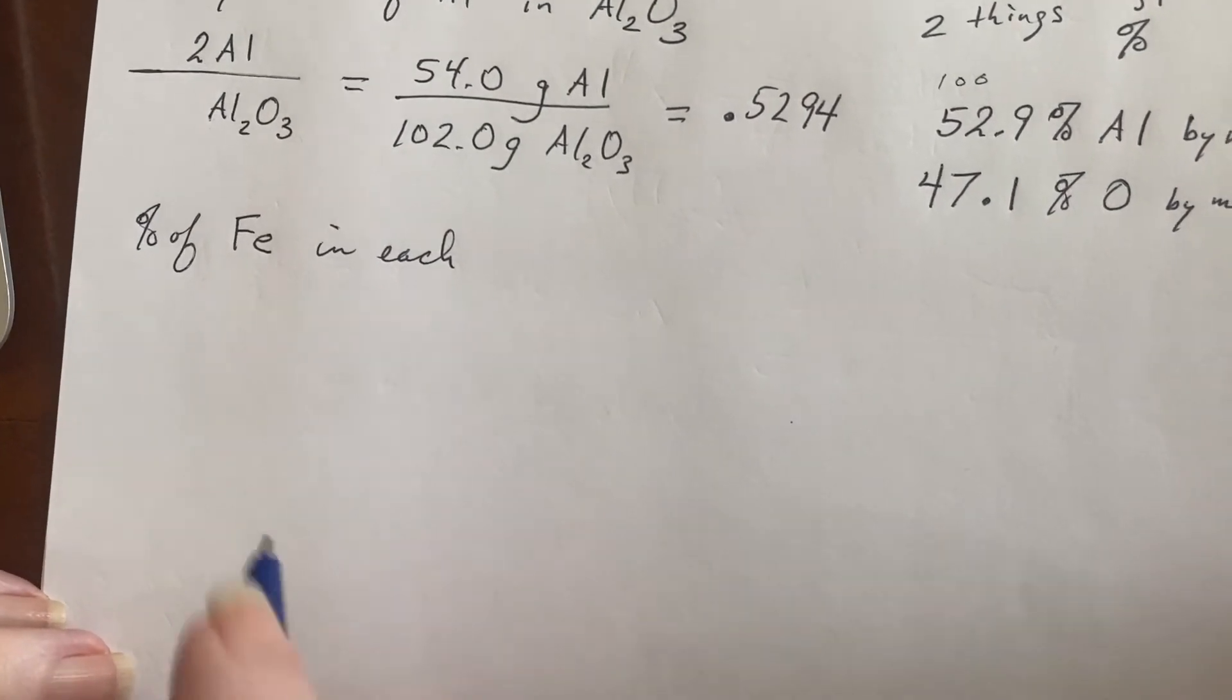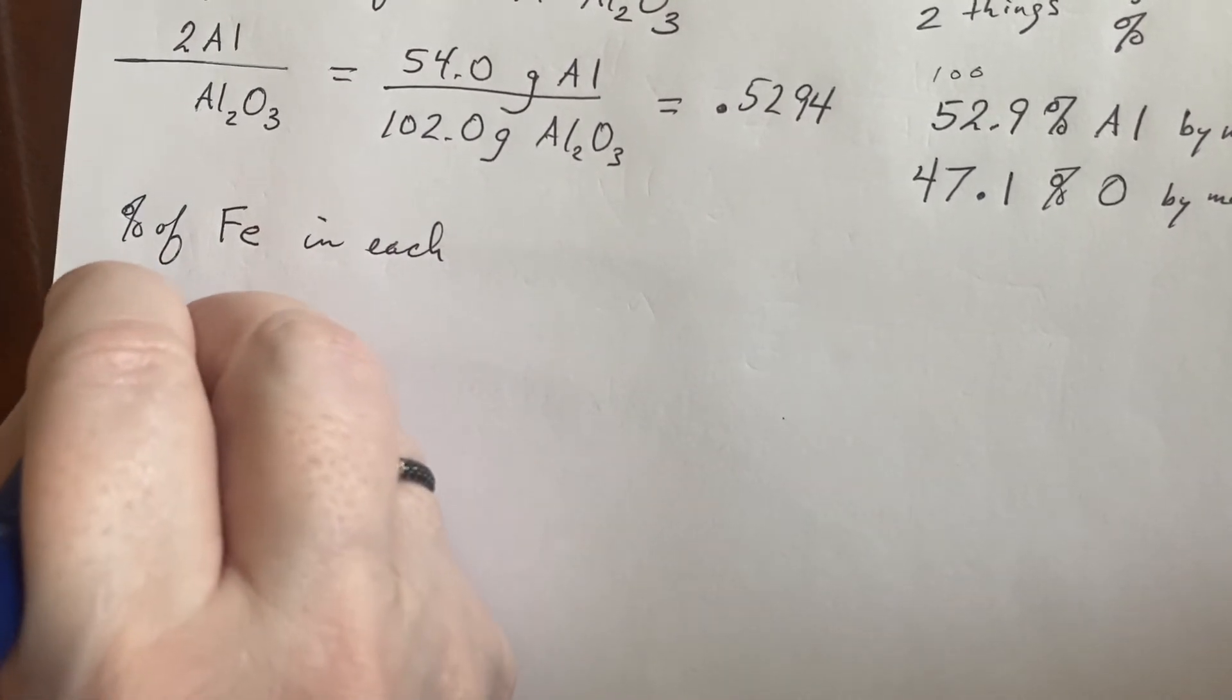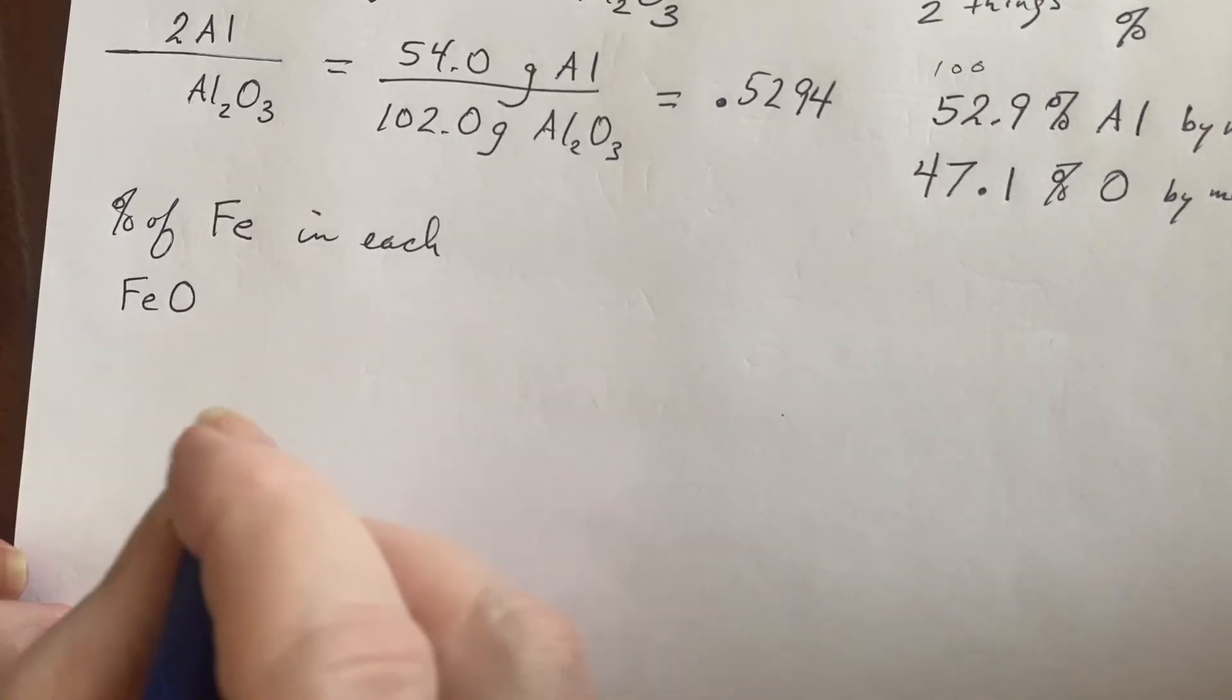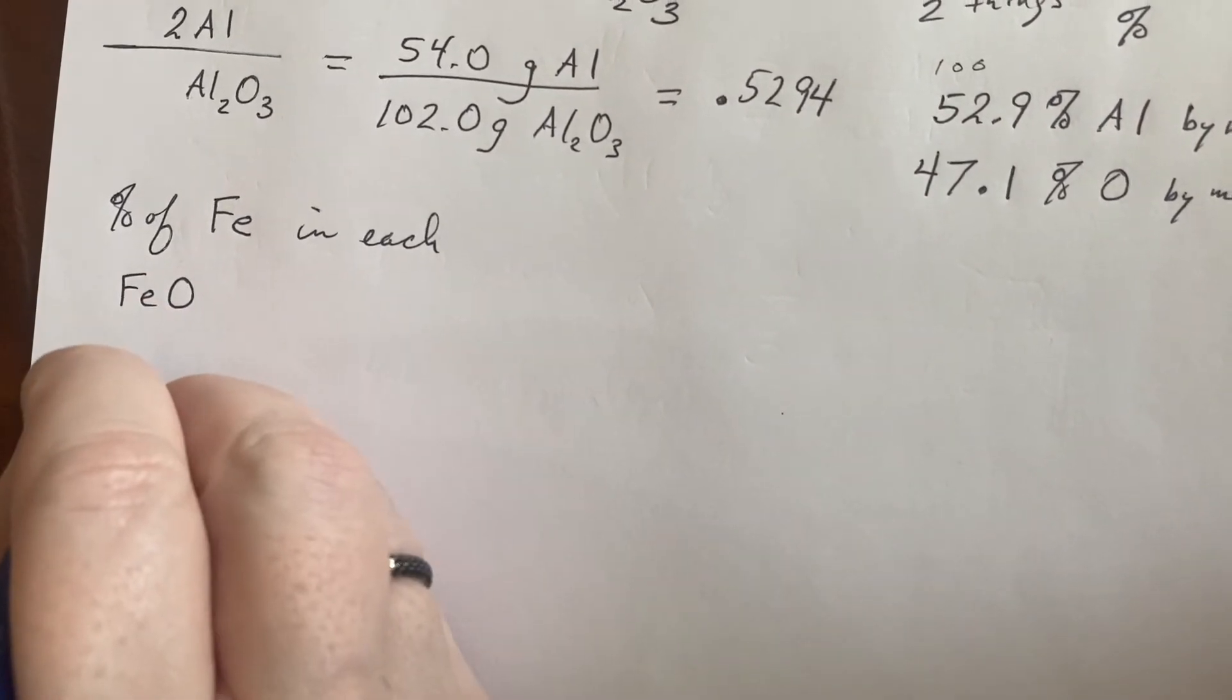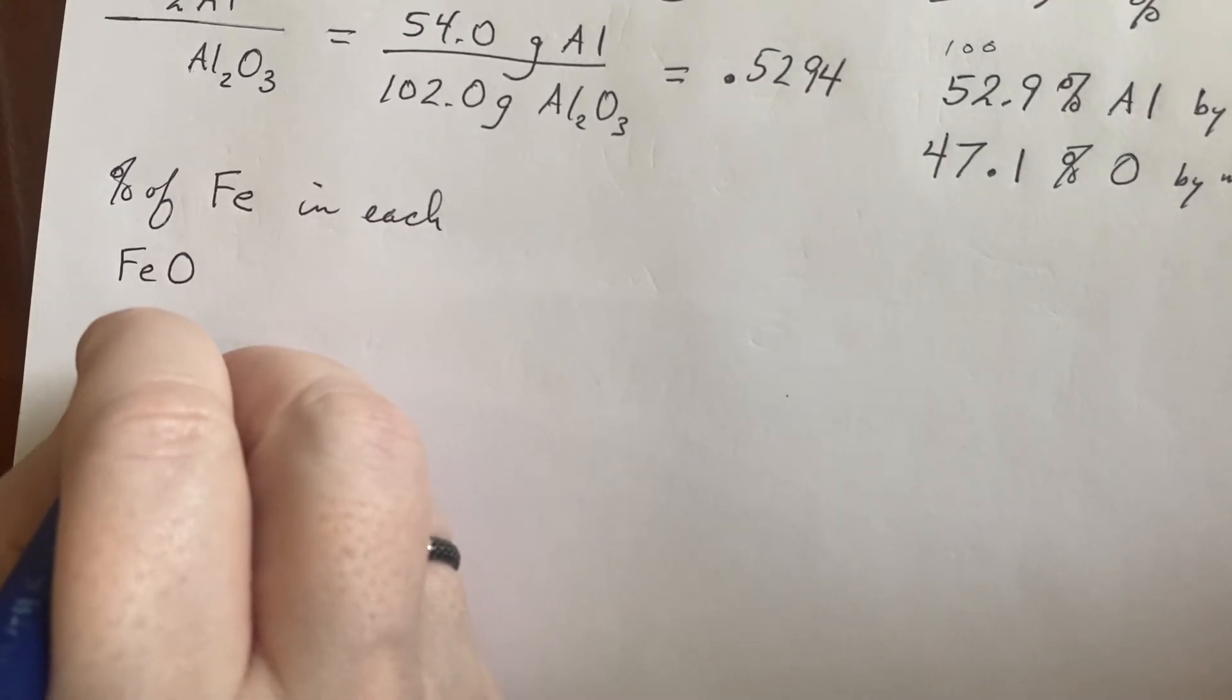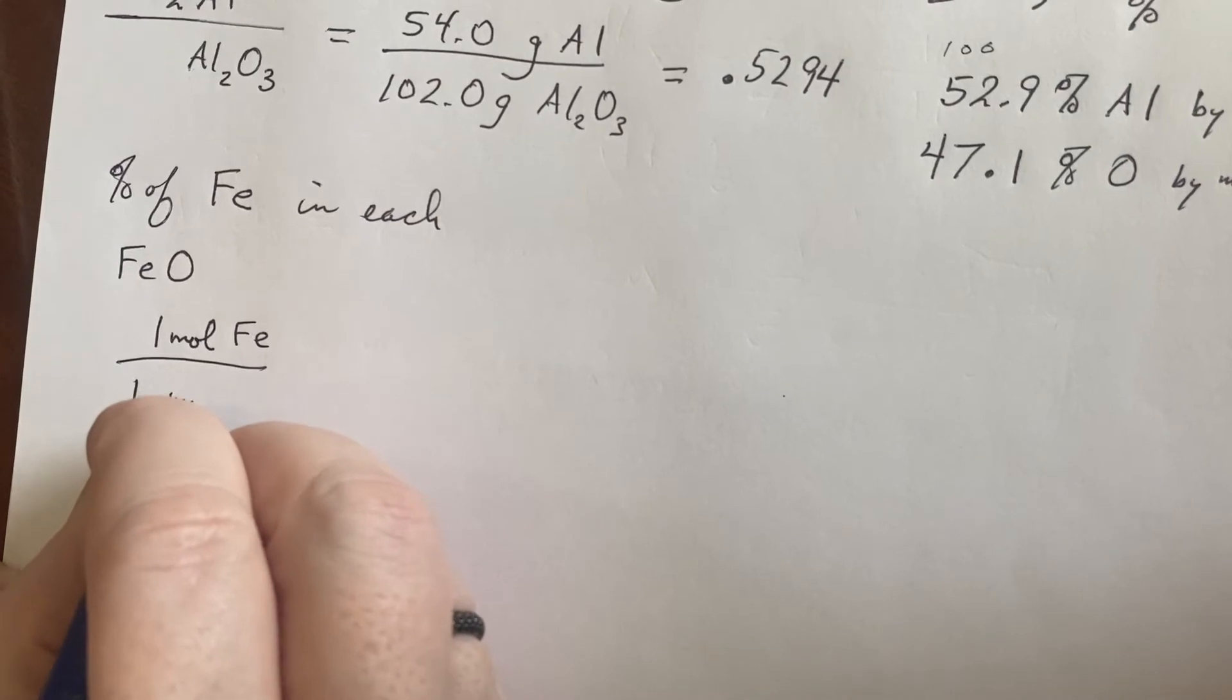Let's start with the wustite. That's got a nice one. So the FeO, well, that's a one-to-one. That's pretty easy. So I'm going to want how much iron, that will be one mole of iron, in one mole of FeO.